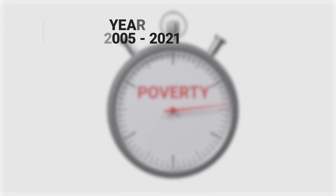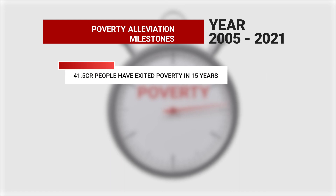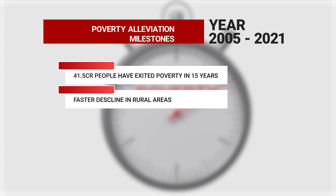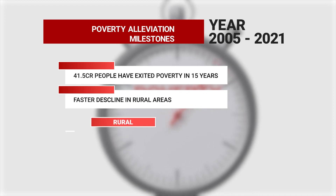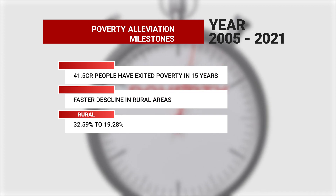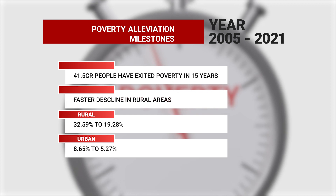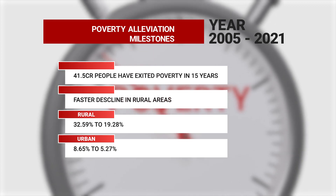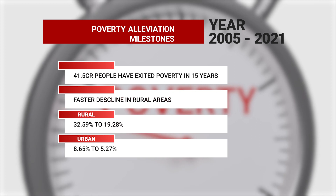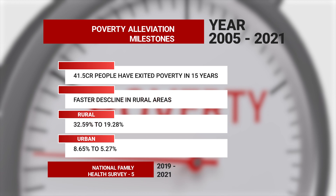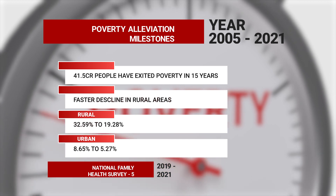That perspective is also important. Getting back to the poverty elevation milestones: 41.5 crore people exited poverty in 15 years. The decline is faster in rural areas than urban areas. Rural poverty comes down from 32.59% to 19.28%. In urban areas, 8.65% in 2005 comes down to 5.27% in 2021. This is a report published in the National Family Health Survey 5, 2019 to 2021.